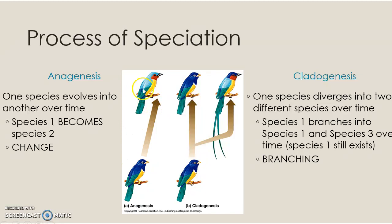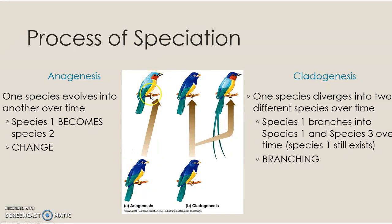It's not like this bird turns into this bird, but through offspring, selection, mutation, and all of those things we've talked about, a new bird evolves. This original species one bird no longer exists in anagenesis — it has evolved into this new species.